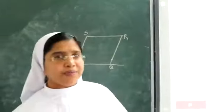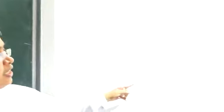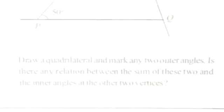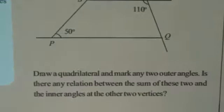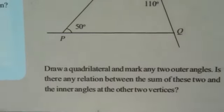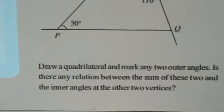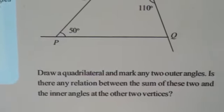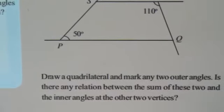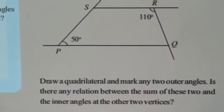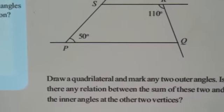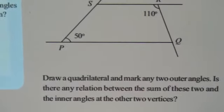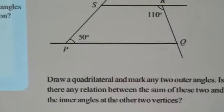Children, we are going to see the next problem. Draw a quadrilateral and mark any two outer angles. Is there any relation between the sum of these two outer angles and the inner angles at the other two vertices?